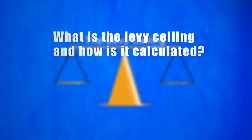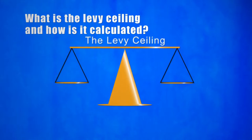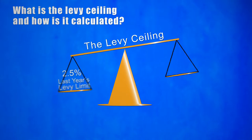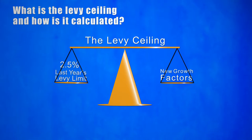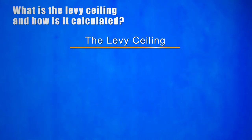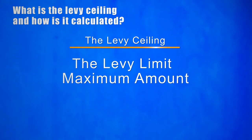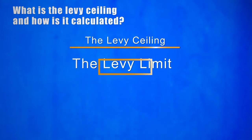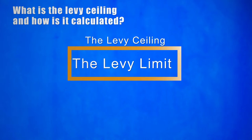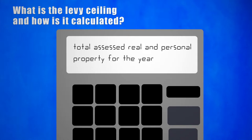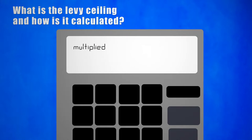The final step in determining the new levy limit for a year is to compare the subtotal that results from increasing last year's levy limit by the annual two and a half percent and new growth factors to this year's levy ceiling. The levy ceiling is the maximum amount the levy limit may be in a given fiscal year — it is a constraint on the size of the levy limit. The law sets out this formula: the total assessed valuation of the community's taxable real and personal property for the year is multiplied by two and a half percent.